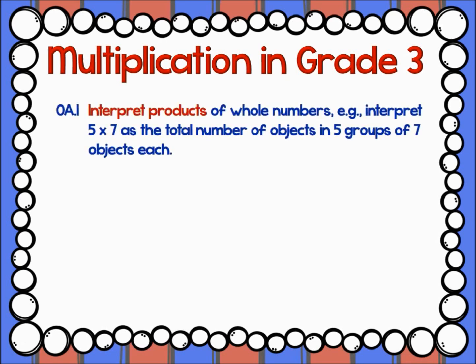Standard OA1 introduces the concept of multiplication and asks students to see multiplication as the total number of objects in a given number of groups — for example, five groups of six objects. This builds off the idea that multiplication is a more efficient way to represent repeated addition. OA1 is only exploratory; it does not expect students to master facts at this time. Instead, they will just build groups with manipulatives and drawings.